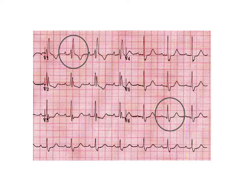Here is an EKG of a typical right bundle branch block. In leads V1 and V2 you see the typical R, S, R prime pattern. In V6 you see the Q wave from septal depolarization with a large, tall R wave, and then the widened S wave at the end significant for right ventricular depolarization.